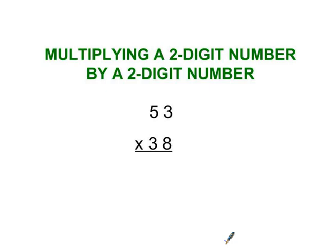Alright, to multiply a two-digit number times another two-digit number, what I'm going to do first is multiply the 53 times the 8. That's it. Pretty simple. You guys should know how to do that, just pretend like that's not even there.